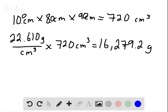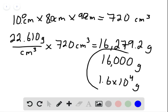And as we use 10.0, 8.0, and 9.0, they have two significant figures. So we're going to have to express this with two significant figures. You could use scientific notation, or you could just round to 16,000 grams. We're going to do 1.6 times 10 to the 4 grams. We have two sig figs, and that should be your answer.